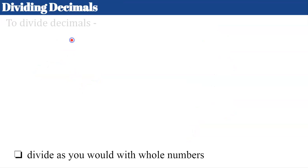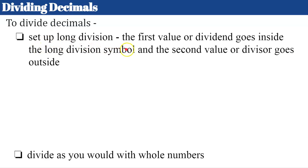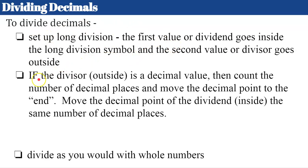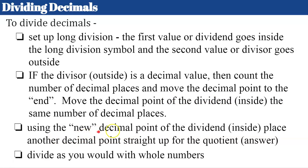Now let's review dividing with decimals. To divide decimals, we're going to set up long division. The first value or dividend goes inside the long division symbol, and the second value or the divisor goes outside. So first inside, second outside. Then if the divisor outside is a decimal value, we're going to count the number of decimal places and move the decimal point to the end. We'll move the decimal point of the dividend inside the same number. We're going to use the new decimal point of the dividend inside and place another decimal point straight up for the quotient or our answer. And we're going to divide as we would with whole numbers.